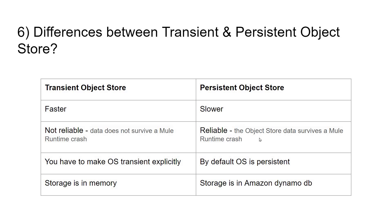Even if the Mule application crashes, the persistent object store is safe because the data is stored in Amazon DynamoDB. Once the application is back up and running, you still have the values already stored. By default, the object store will have a persistent nature — unless you explicitly change it to transient. So in order to have a transient object store, you have to explicitly choose it.